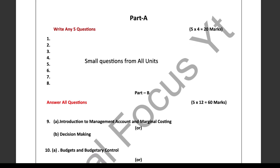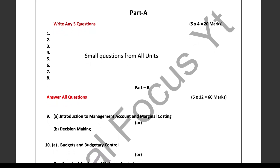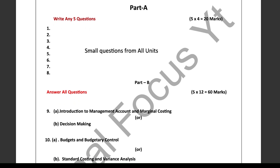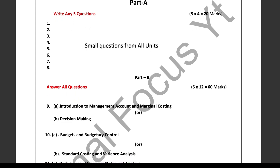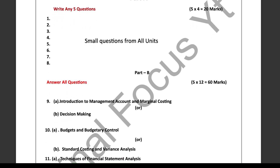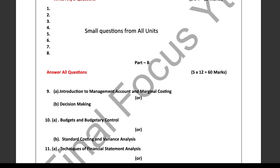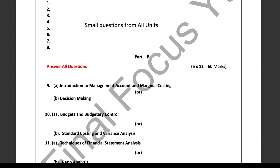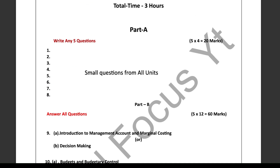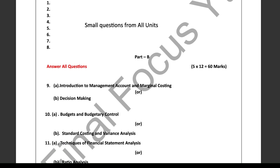Now let's move on to Part B. This section is where the major marks are — worth a total of 60 marks: five questions times 12 marks equals 60 marks. In Part B there will be five questions and you have to answer all of them.